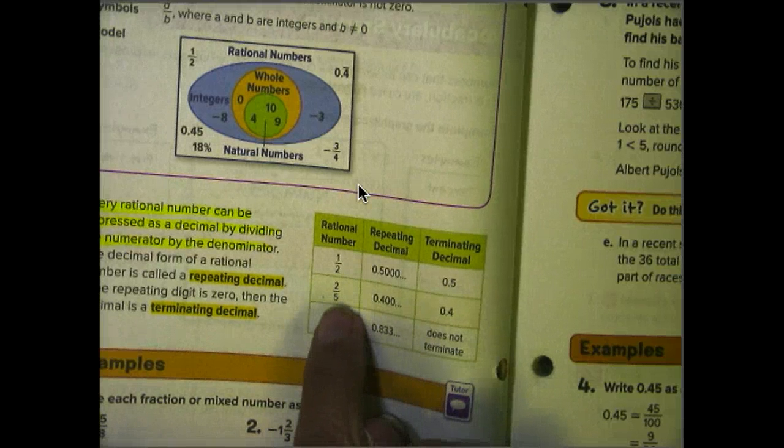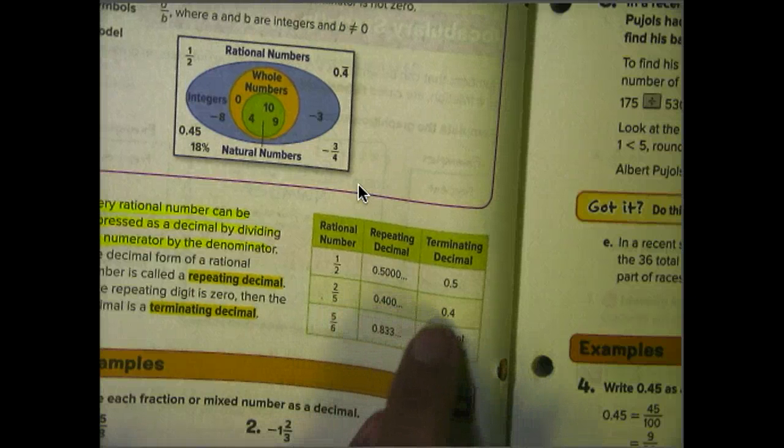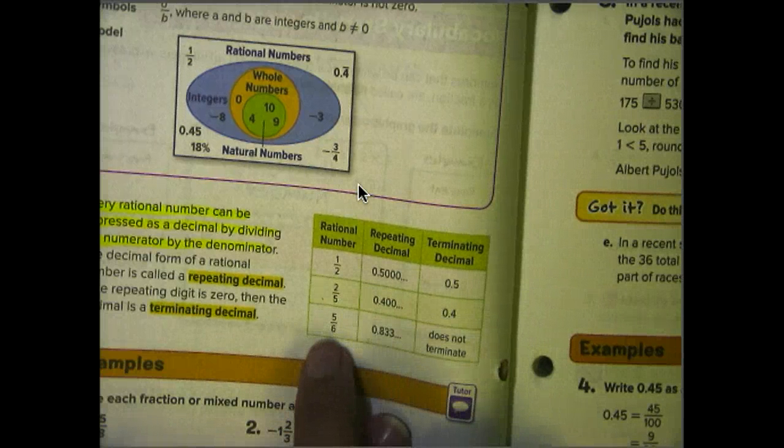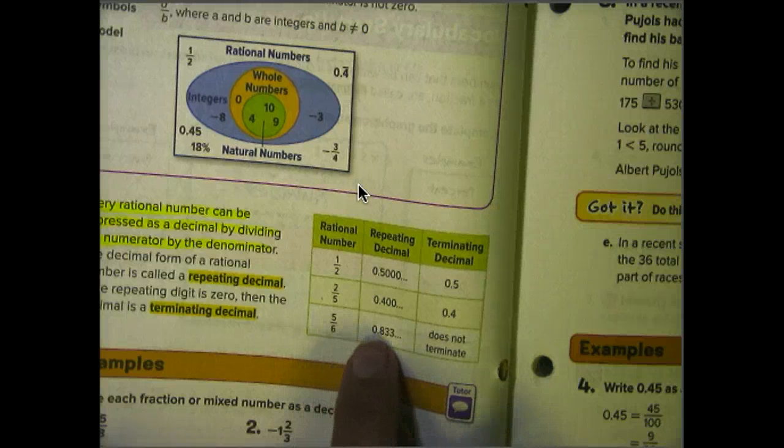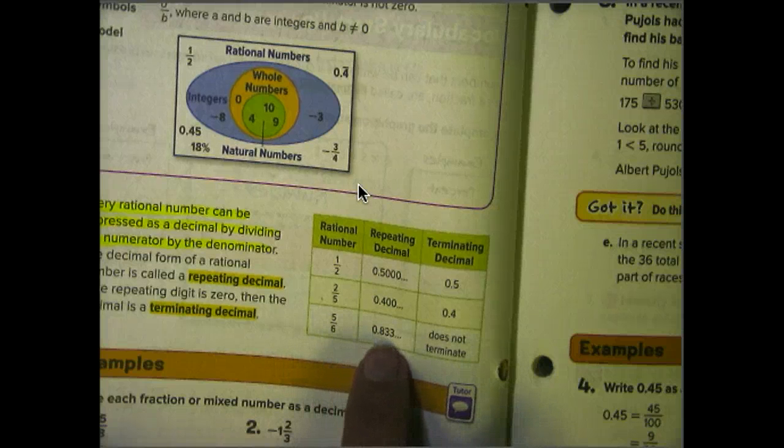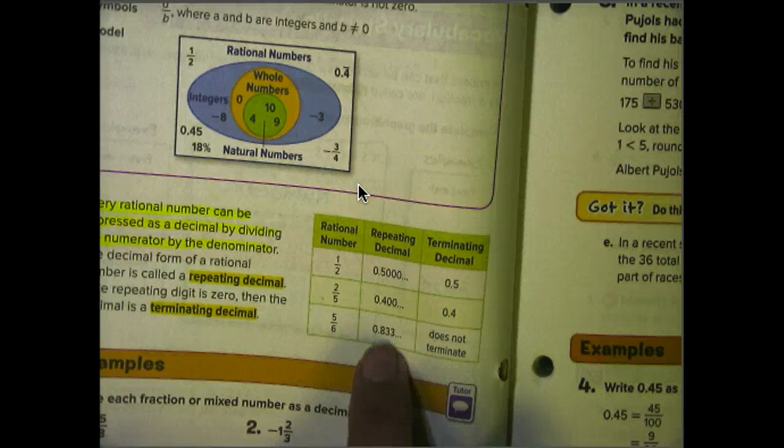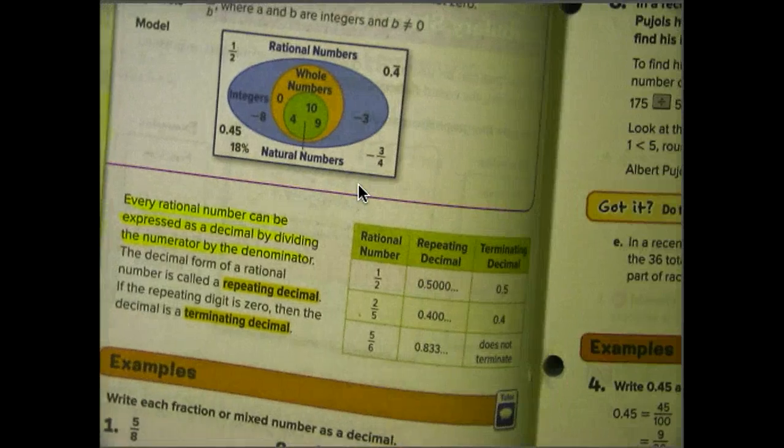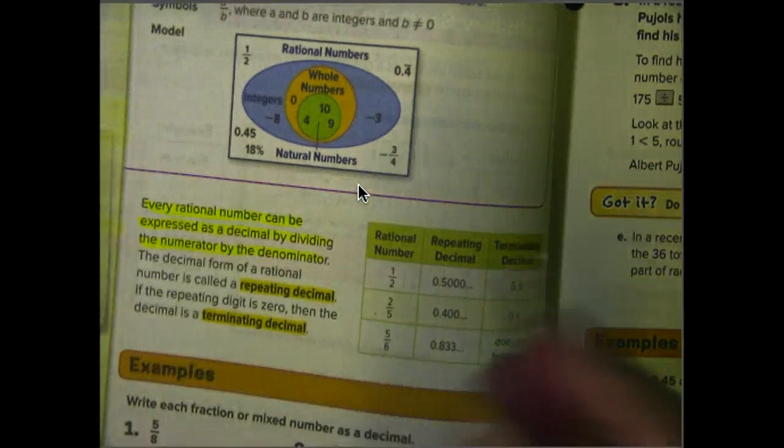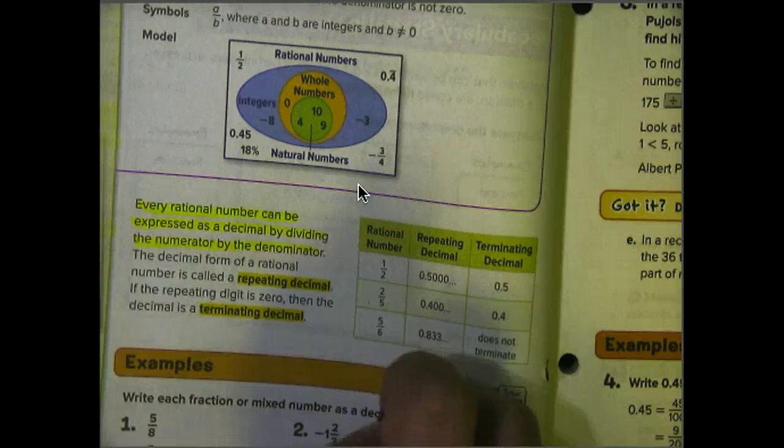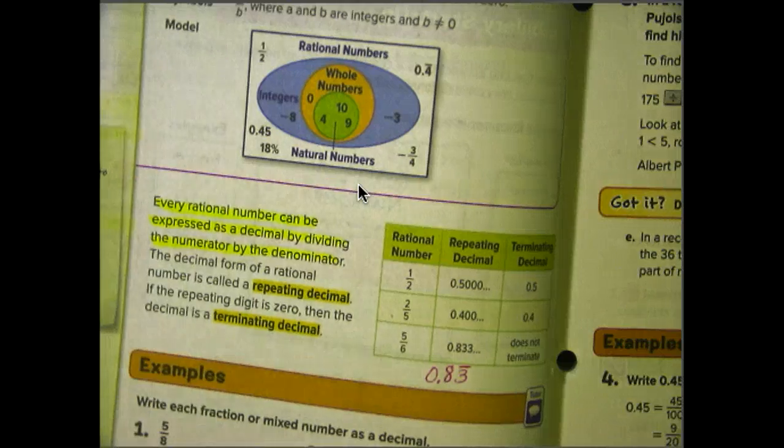Two fifths, or two over five. Two divided by five is going to be 0.400. Terminating decimal, 0.4. Five sixths, or five over six. Five divided by six is 0.833333. Terminating decimal. It does not terminate. It is a repeating decimal. And so we could show that repeating decimal using a bar notation. If you look over to the left in your book, it talks about bar notation. We could show it by putting a bar over the three because that is the number that repeats.